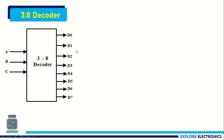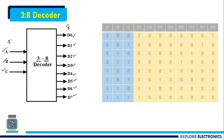A 3-to-8 decoder has three inputs: input A, input B, and input C. It will decode those three inputs to an eight-bit output, so we have D0, D1, D2, D3, D4, D5, D6, D7 — totally eight outputs and three inputs. This decoder decodes three bits to eight bits.